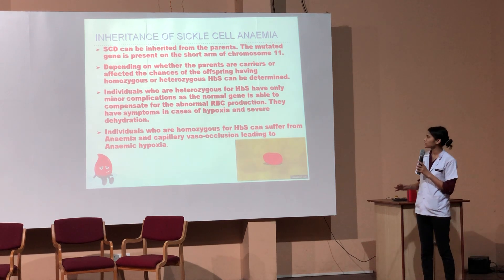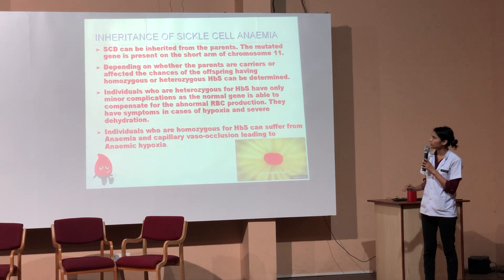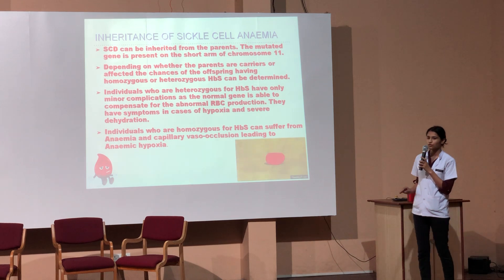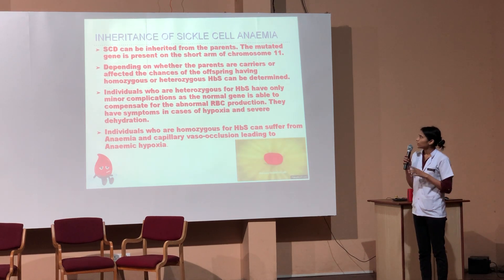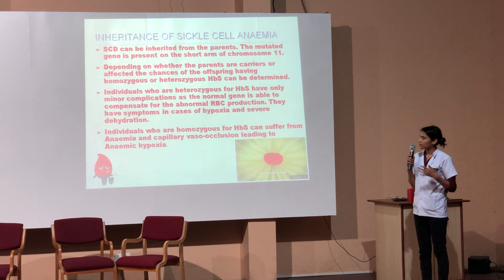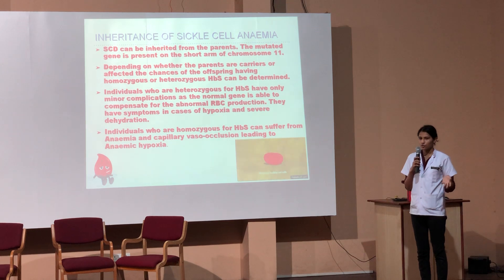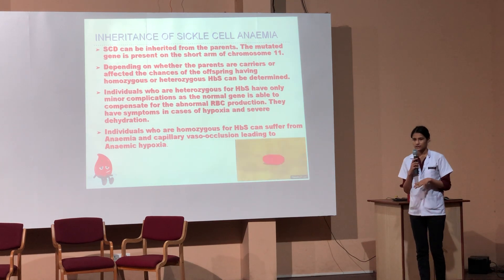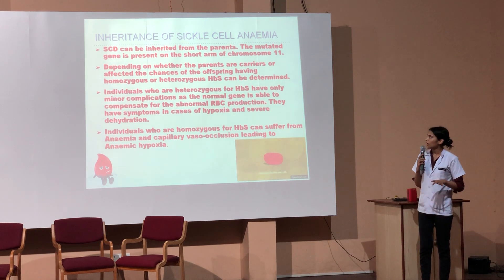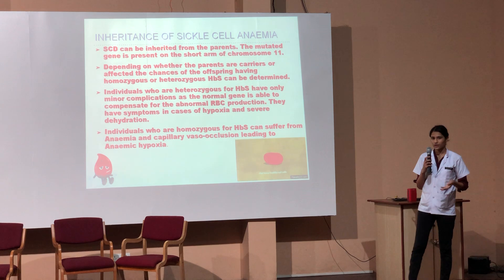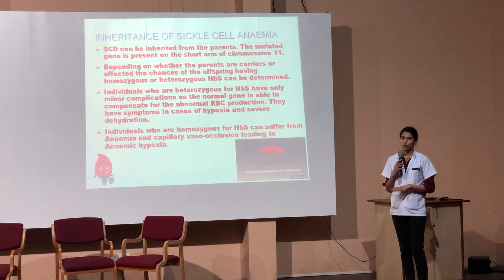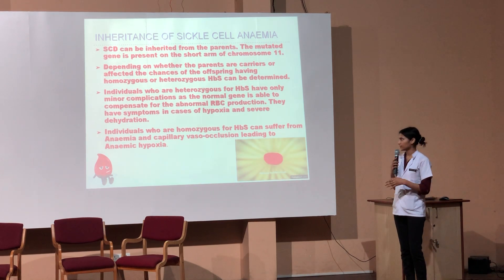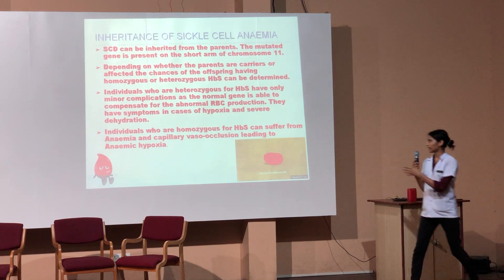If sickle cell disease is inherited from the parents, the mutated gene is present on the short arm of the 11th chromosome. Depending on whether the parents are carriers or homozygous for the sickle cell gene, the percentage of children affected with either sickle cell trait or sickle cell disease varies accordingly.